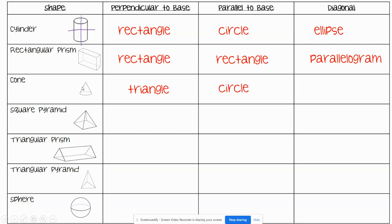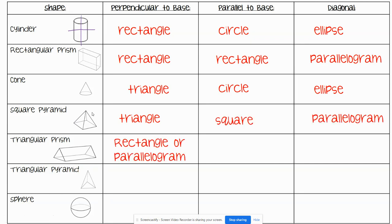Cutting a cone diagonally gives you the shape of the base but elongated, so it will be an ellipse. A square pyramid cut perpendicular to the base — so straight up and down — is going to give you the shape of one of its faces, which is a triangle. Parallel to the base gives you the shape of the base, which is a square. Diagonally will give you a parallelogram.